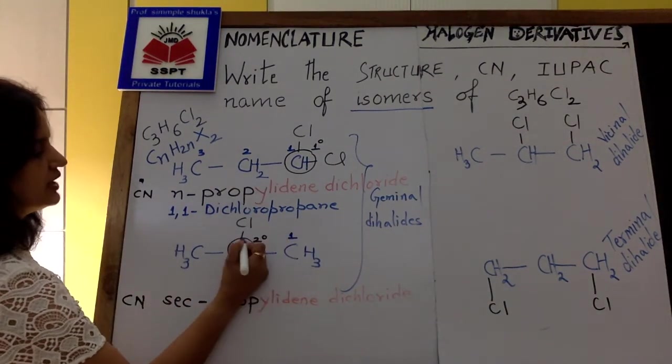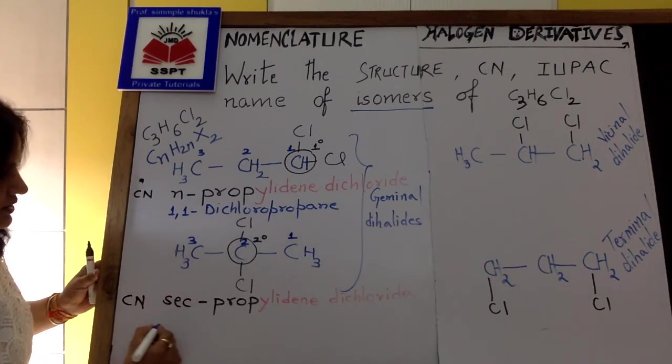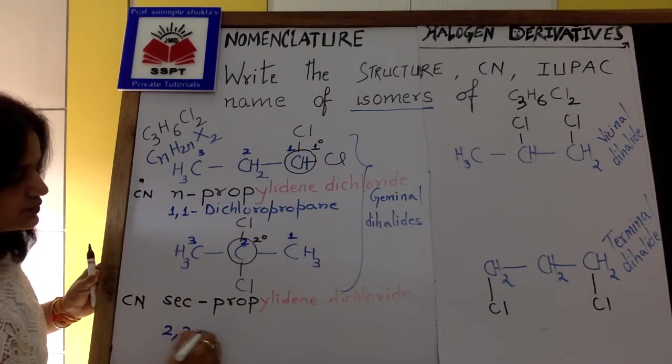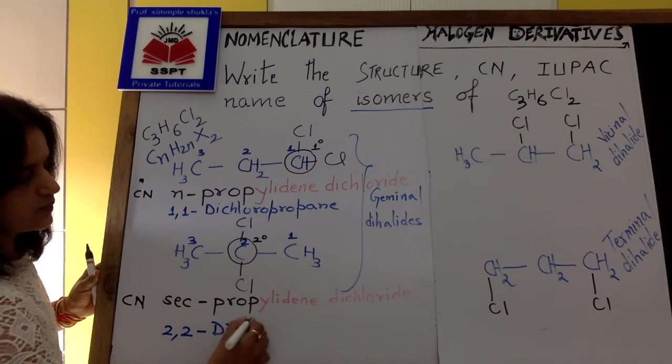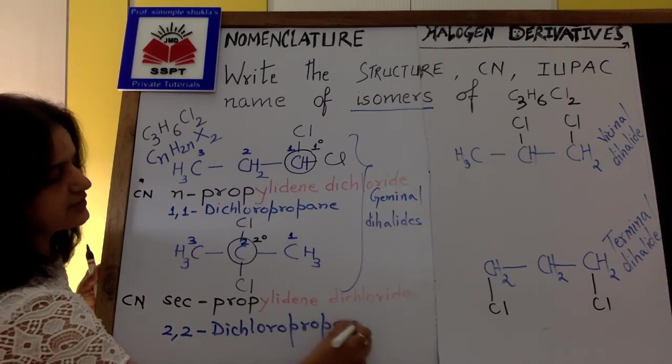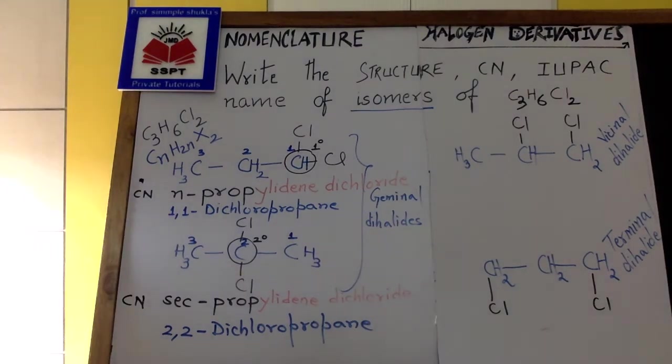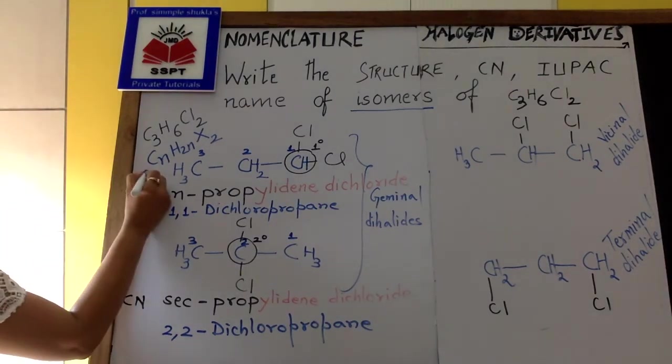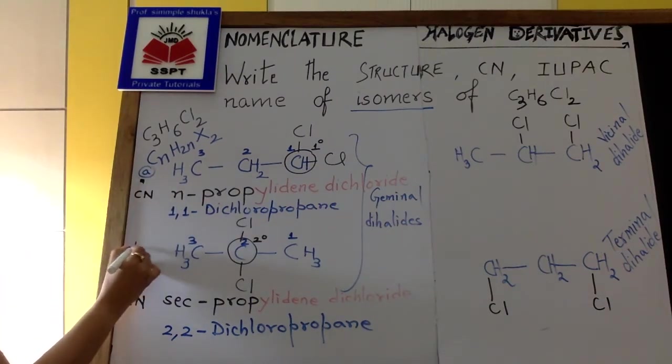Now, the IUPAC name. I'm numbering the long chain. One, two, three. So, 2,2-dichloropropane. 2,2-dichloropropane. So that is the IUPAC name. So these two are the geminal dihalide. So we completed two isomers. A, B.